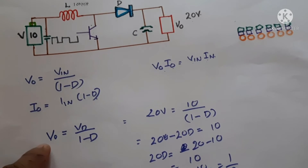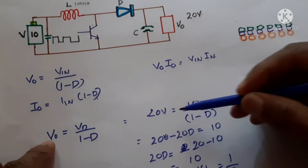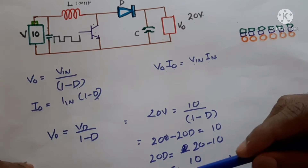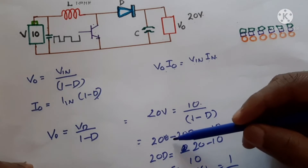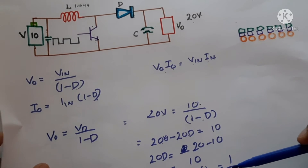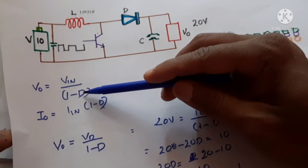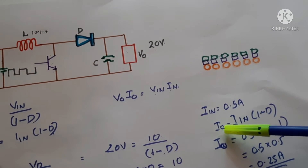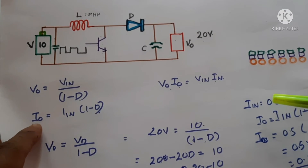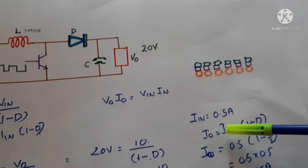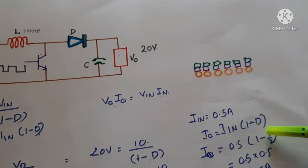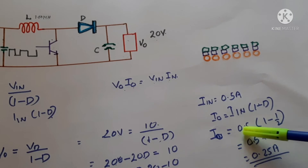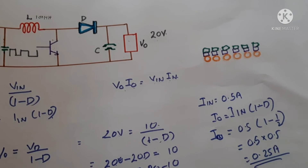From the equation, the output voltage is 20 volts and the input voltage is 10 volts. We can find the duty cycle D using V₀ = Vᵢₙ / (1 − D). To get 20 volts at the output, we have to turn on the transistor for half the time, so D = 0.5. To calculate the output current: I₀ = Iᵢₙ × (1 − D) = 0.5 × (1 − 0.5) = 0.5 × 0.5 = 0.25 amperes.